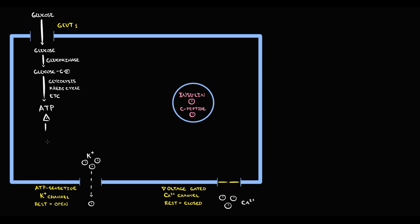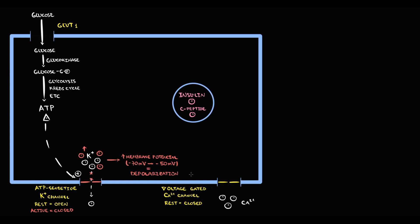Glucose-6-phosphate undergoes glycolysis with subsequent degradation in the Krebs cycle and electron transport chain, that results in production of ATP molecules. ATP molecules activate ATP-sensitive potassium channels. With activation, potassium channels close. If potassium channels close, potassium begins to accumulate inside the cell. With increasing positively charged potassium ions, membrane potential increases — for example, from minus 70, membrane potential increases to minus 50. And the state when membrane potential becomes more positive, we call depolarization.